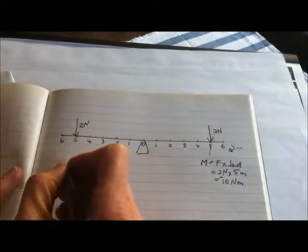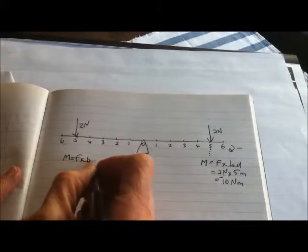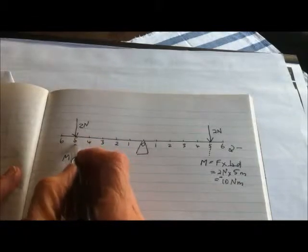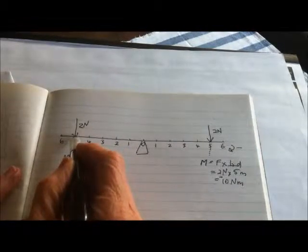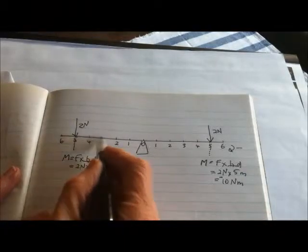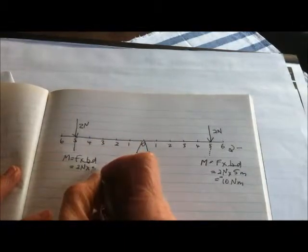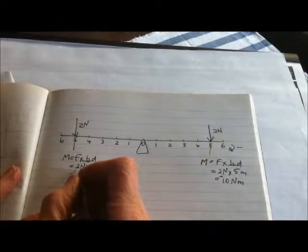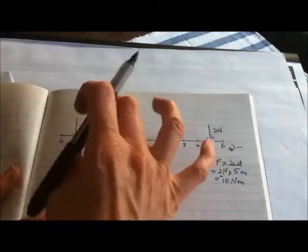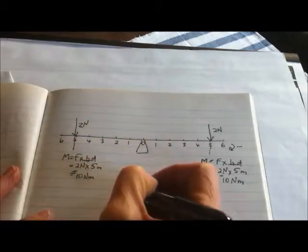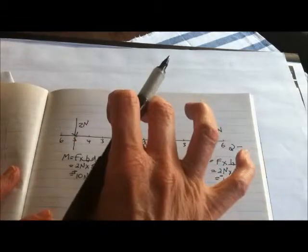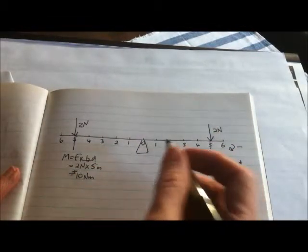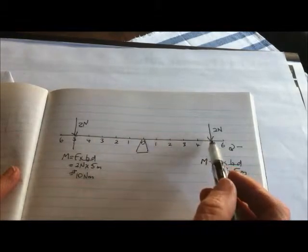The moment on the other side is also force times perpendicular distance: two Newtons times five meters, which is 10 Newton meters. That line of action goes straight down and the distance back to the fulcrum of the seesaw is five meters. That's positive because it's in the clockwise direction — the 'twisting a jar lid off' direction. So we can see this seesaw is balanced.